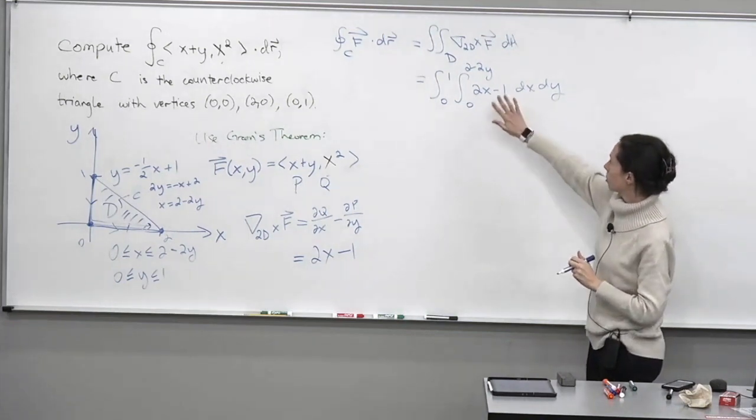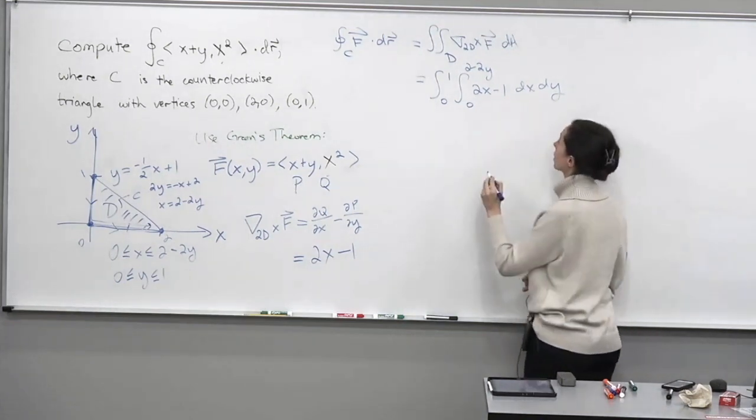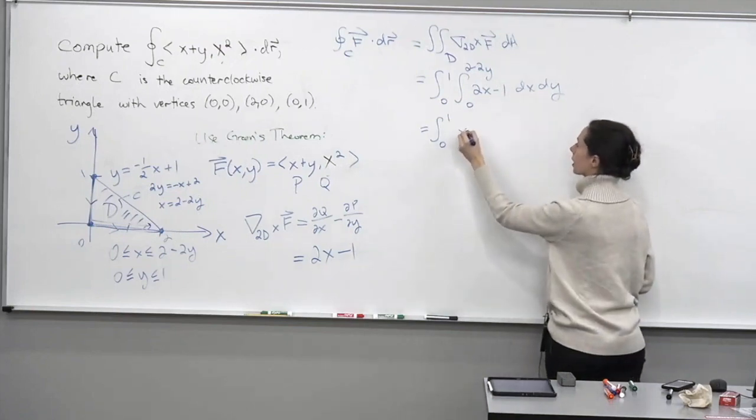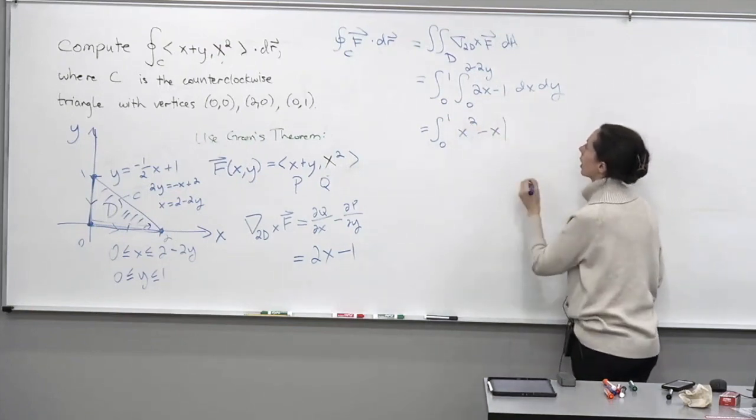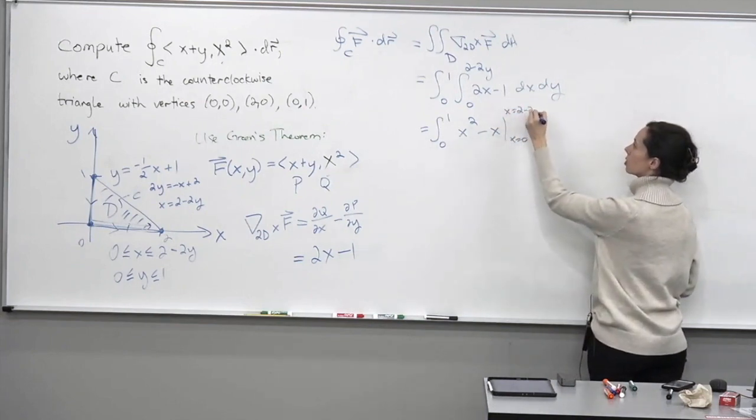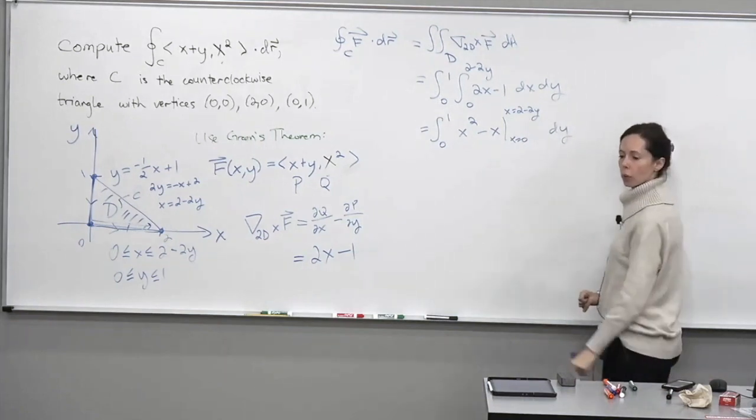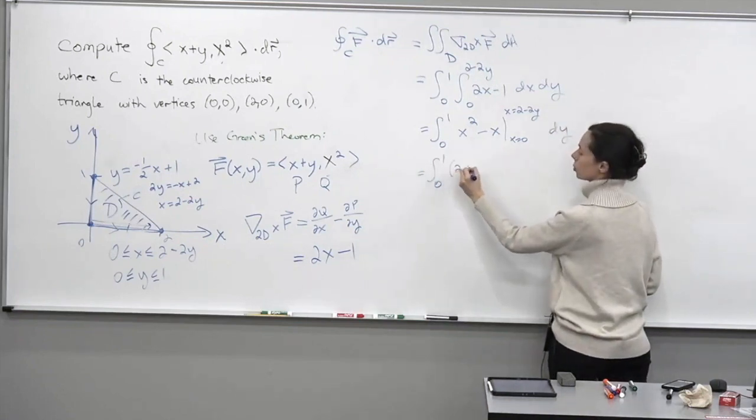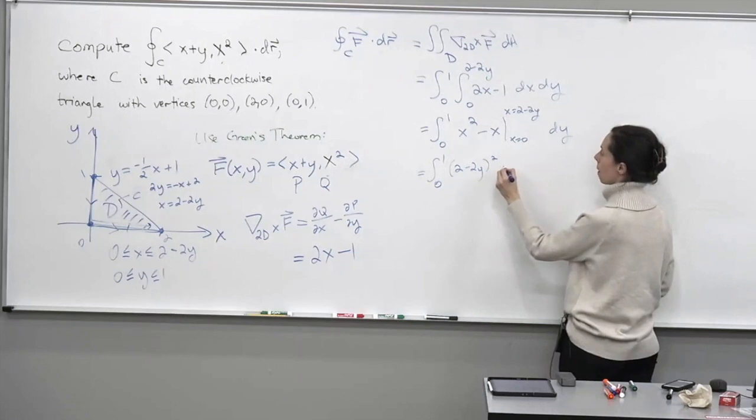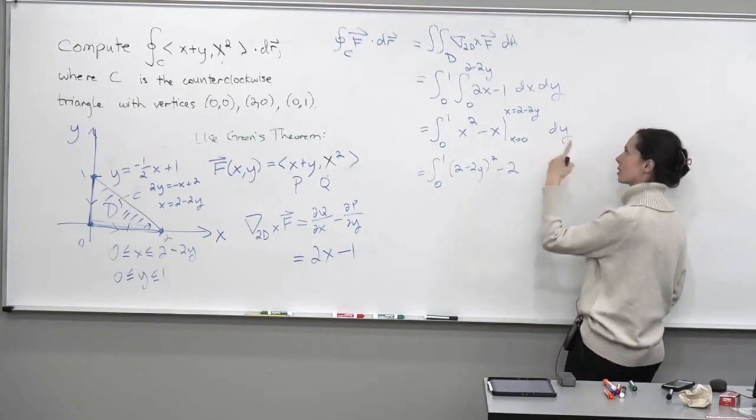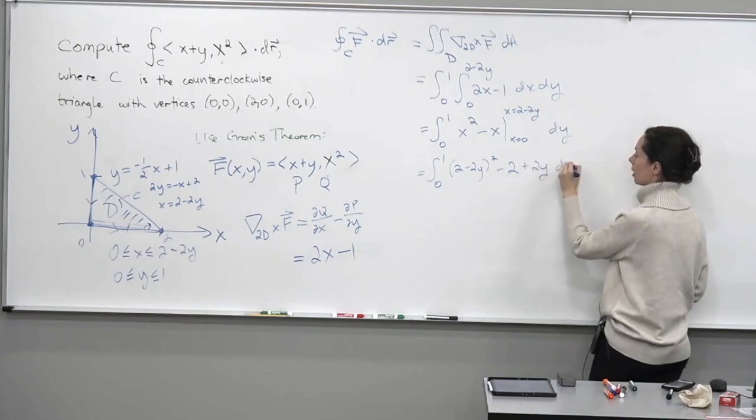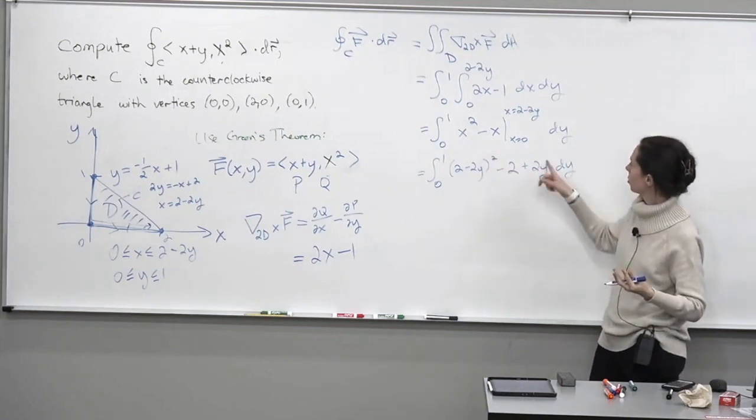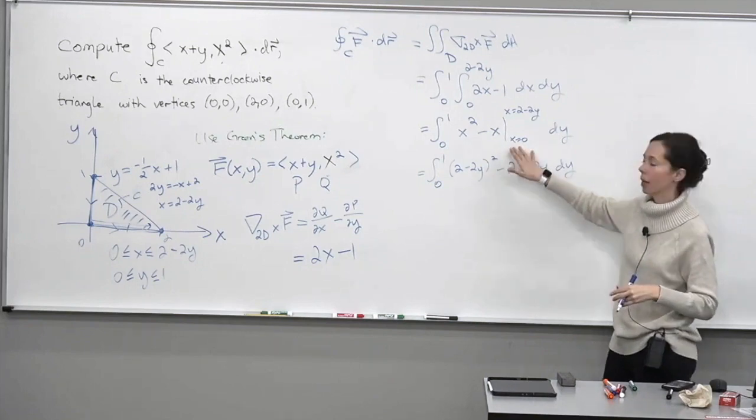But let's go ahead and finish integrating this. I'm going to take the antiderivative of this expression with respect to x. So we'll have the integral from 0 to 1. And then x squared minus x. Evaluated from x equals 0 through x equals 2 minus 2y. And we still have to integrate with respect to y. Plug in top and bottom. We'll have the integral from 0 to 1 of (2 minus 2y) squared. Minus 2 minus negative 2y. So I'm going to write minus 2 plus 2y dy. So let's see if I did that correctly. 2 minus 2y squared. And then minus the quantity 2 minus 2y is negative 2 plus 2y. And then minus 0 for the bottom bound.